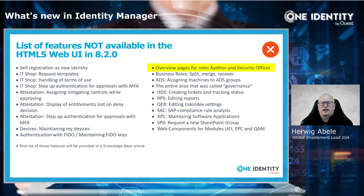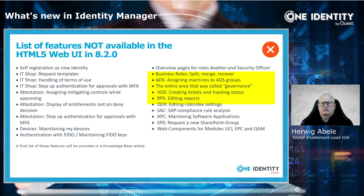On the right-hand side of the slide: the overview pages for role auditors and security officers are not implemented yet. From a business role perspective, split, merge, and recover — the new functions from 8.1 to split, merge, or recover roles — are not implemented in the new front end yet. Several features based on specific modules are also missing: from an Active Directory perspective, assigning machines to Active Directory groups is not implemented. The complete governance menu area is not there. Creating tickets and tracking status, editing reports, editing risk index settings, the complete SAP compliance rule analysis, maintaining software applications, and requesting new SharePoint groups are all not implemented.